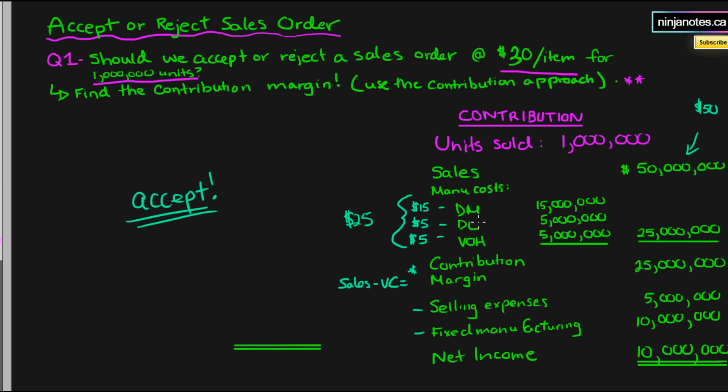So in essence, we look at the variable costs when making a relevant decision. That was a quick summarization of the accept or reject sales order decision. We'll do a harder example in a few days. I just wanted to go through all of the relevant decisions in a very simple way. Make sure to subscribe guys, any questions leave them below, and I'll see you in the next one.